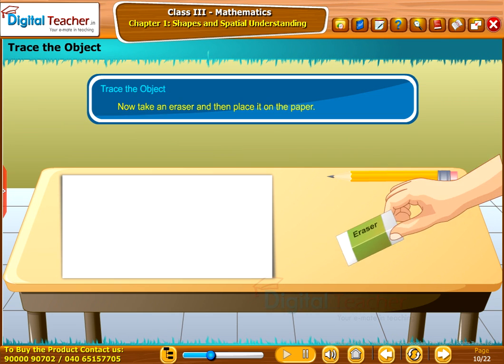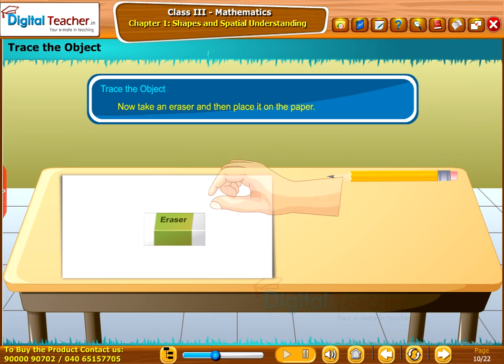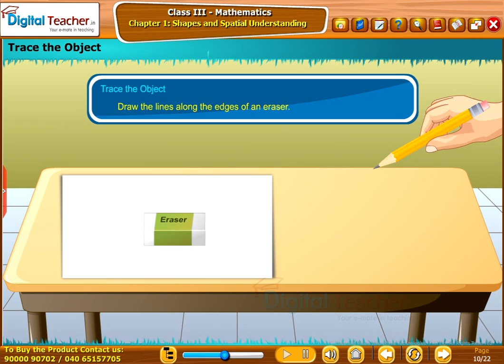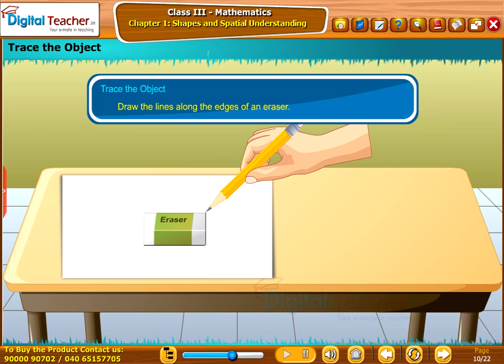Now take an eraser and then place it on the paper. Take a pencil or marker. Draw the lines along the edges of an eraser.